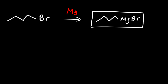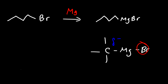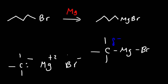What you need to know about the Grignard reagent is that the carbon attached to the magnesium atom is a nucleophilic carbon — it bears a partial negative charge. Magnesium is positively charged and the bromine atom is negatively charged. Think of it as the carbon having a negative charge, magnesium a positive 2 charge, and bromide a negative charge. In either case, this carbon is nucleophilic.